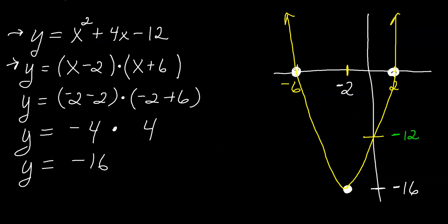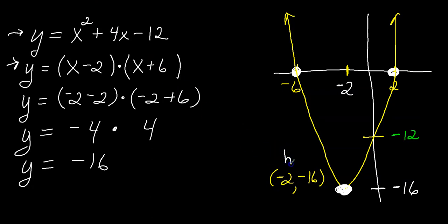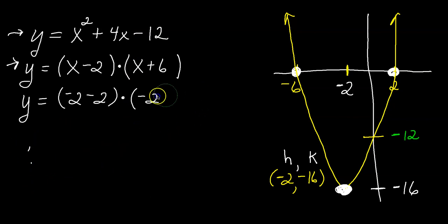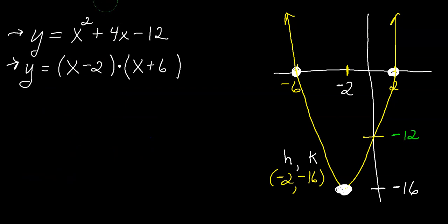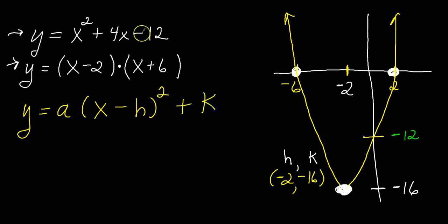Now all I need to do is write the equation in vertex form. The goal of this video is to convert the standard form equation into this form: y equals a times (x minus h) squared plus k. I'll substitute for a, h, and k. The vertex is at (negative 2, negative 16), which I'll label as h, k.